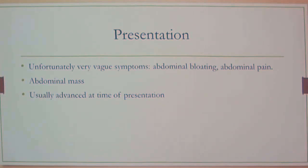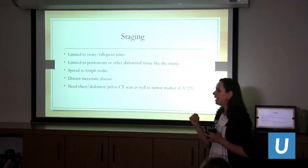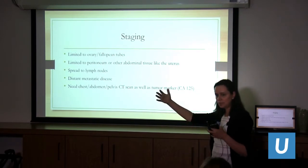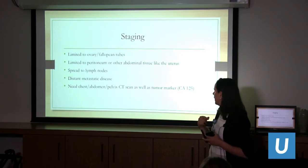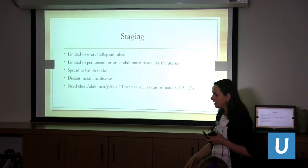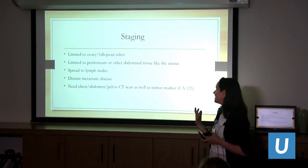In terms of staging — basically where the cancer is and how far it has spread — you look at whether it's just in the ovaries, if it has spread to the peritoneum or lining of the intestine, or if it's outside the abdominal cavity. At diagnosis, everyone gets a whole body CT scan to determine extent of disease, as well as lymph node involvement.